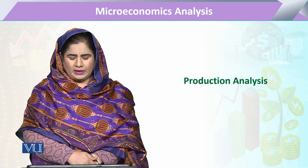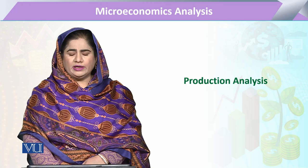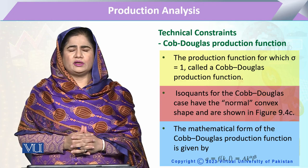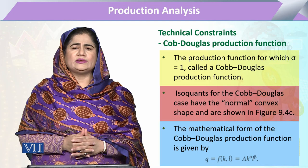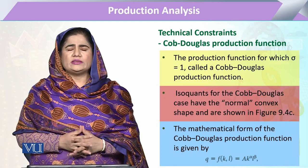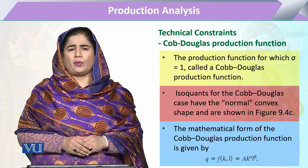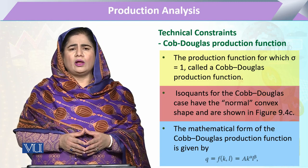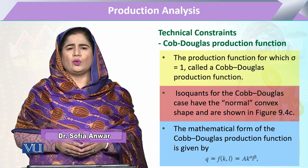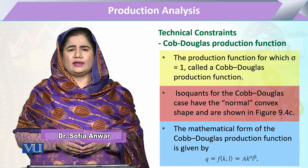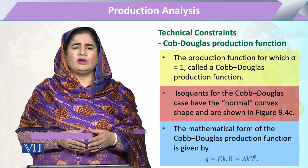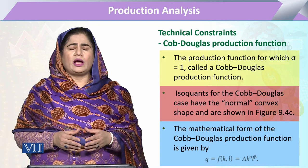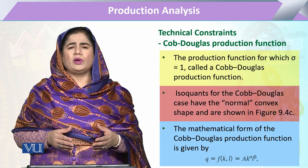In module 134, in production analysis, we are going to study the Cobb-Douglas production function. It is the most widely utilized production function in production analysis. Any production function that has an elasticity of substitution equal to one is called the Cobb-Douglas production function. Its isoquants are of the normal convex shape.